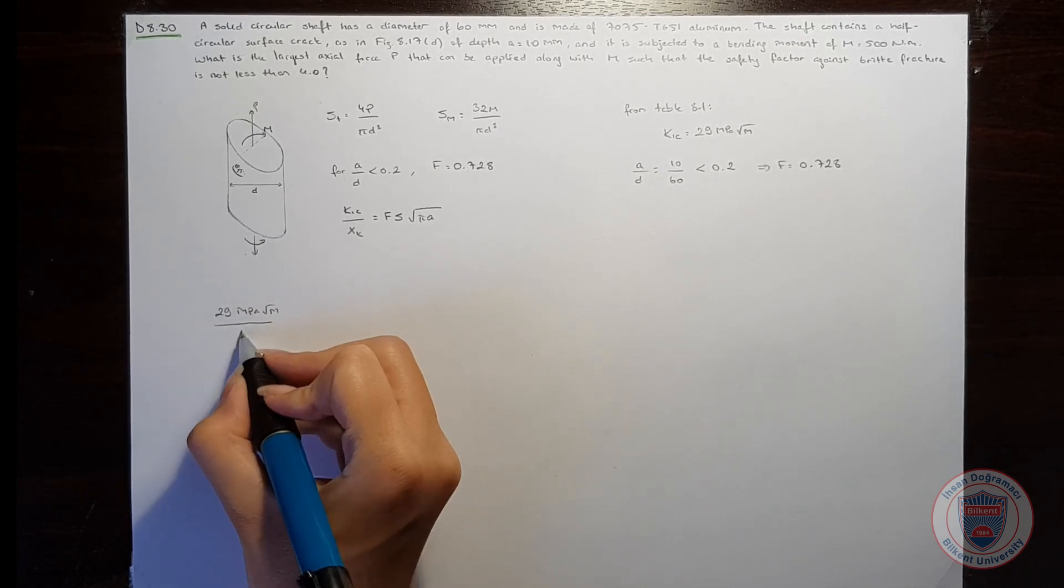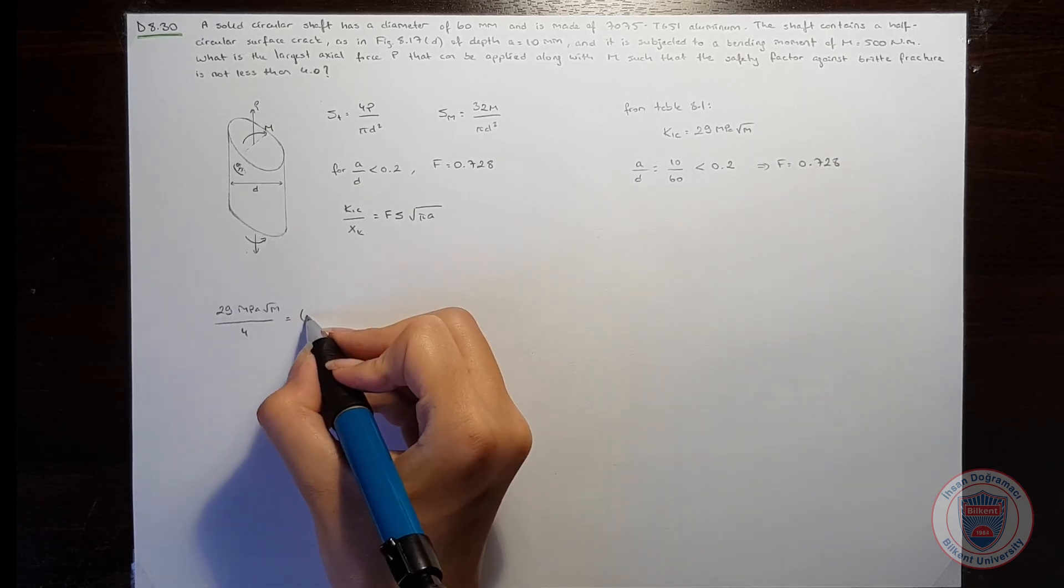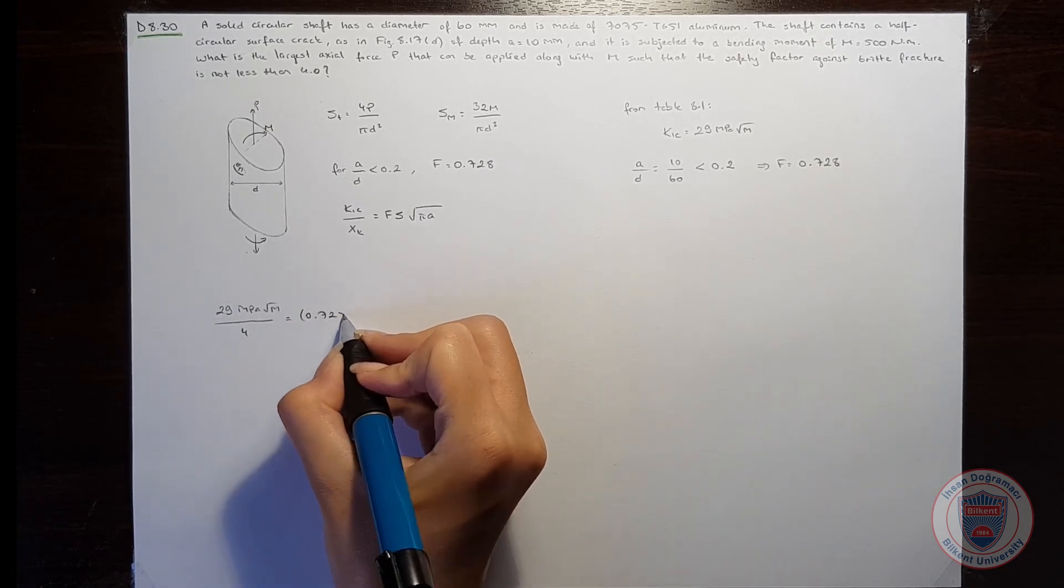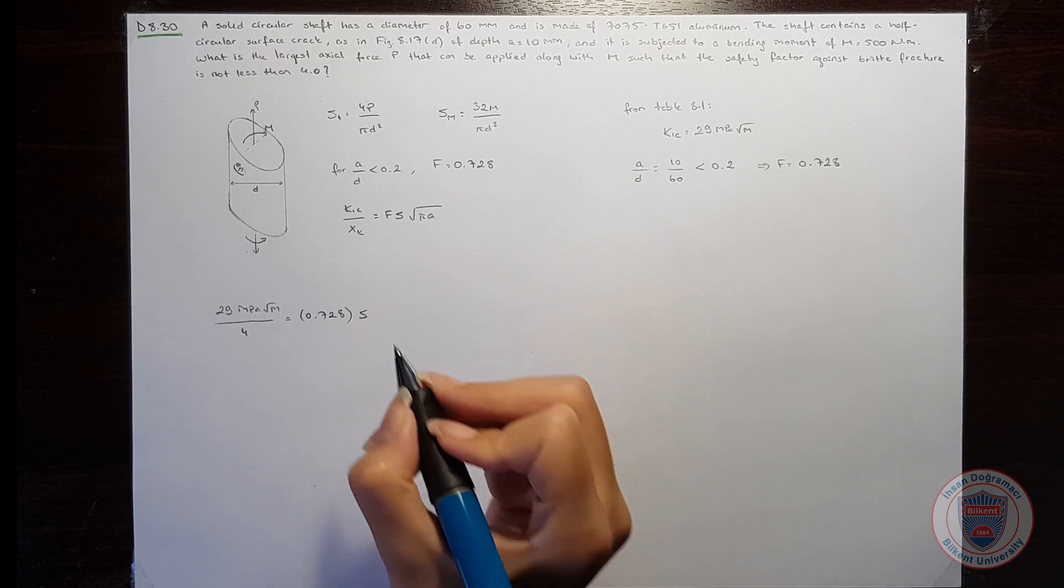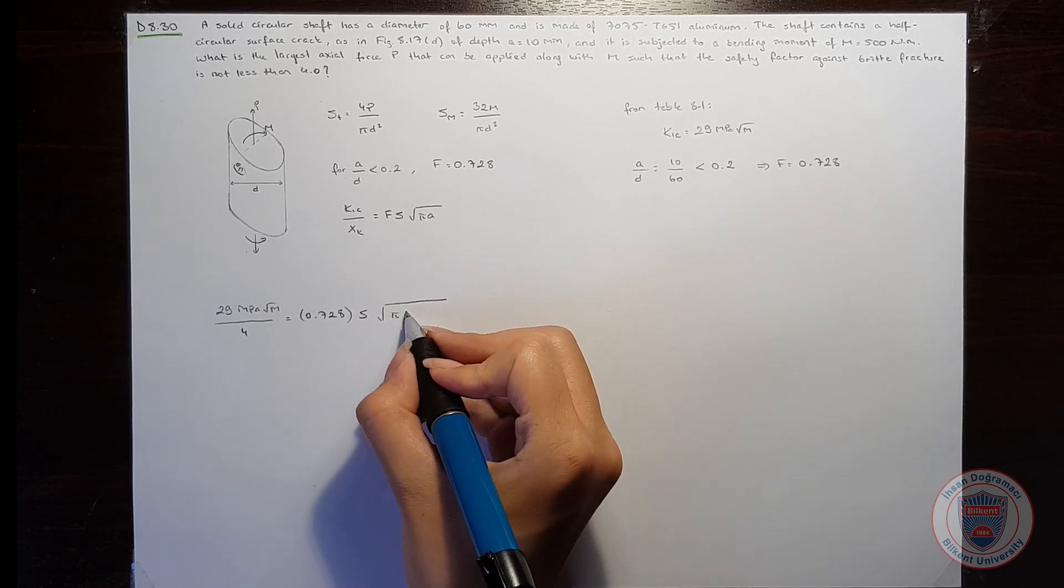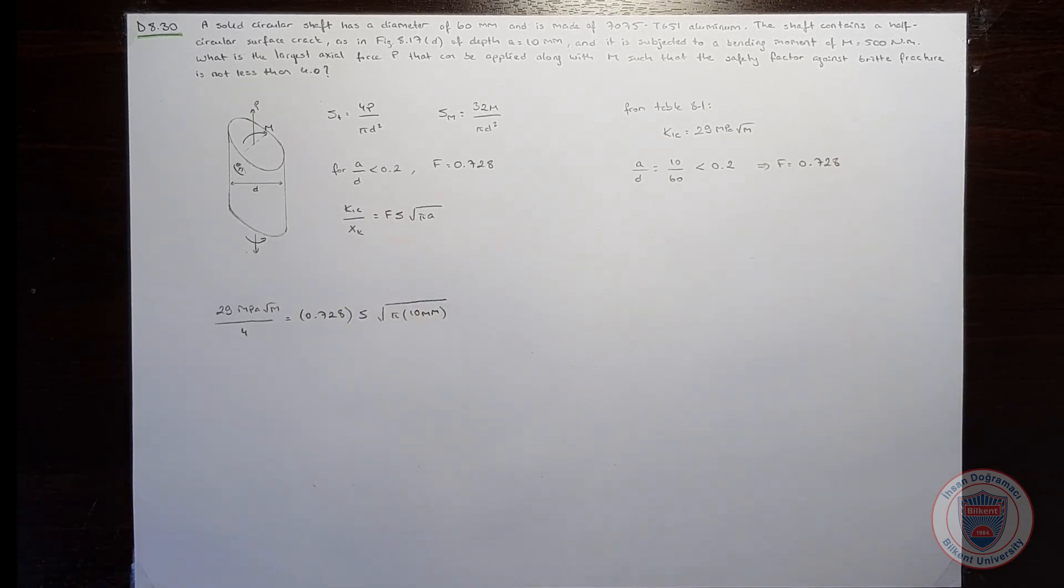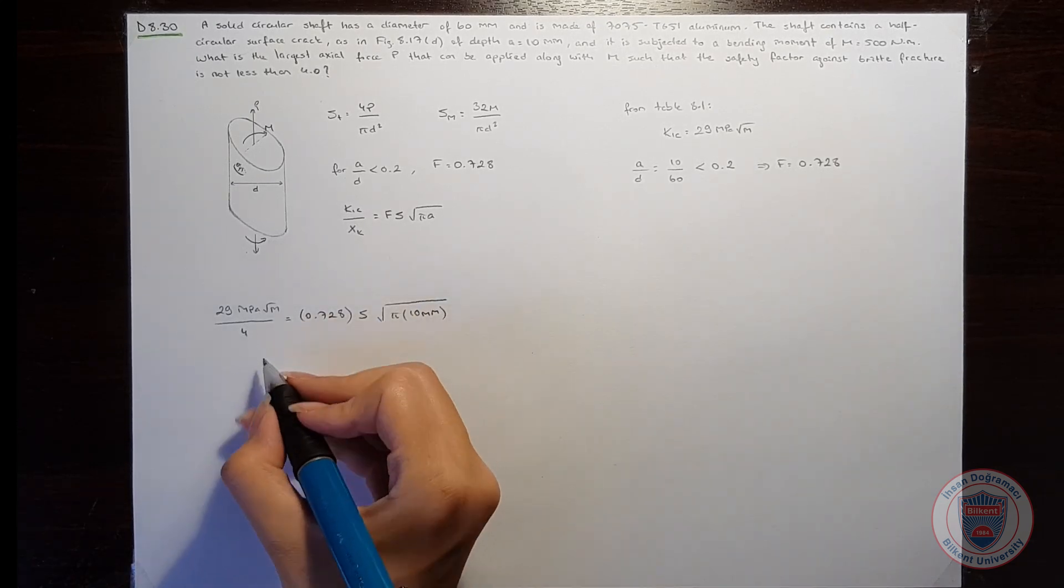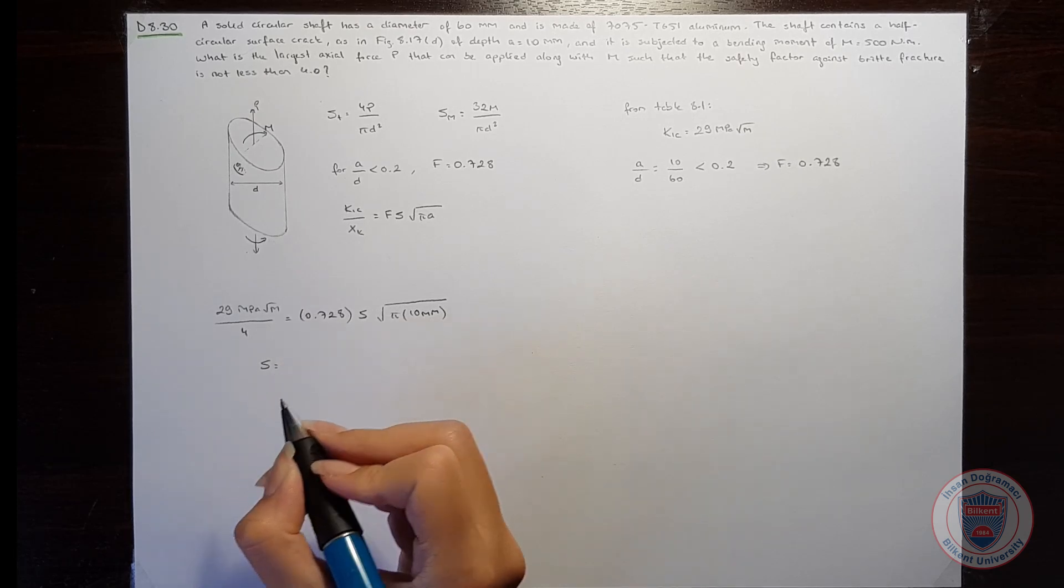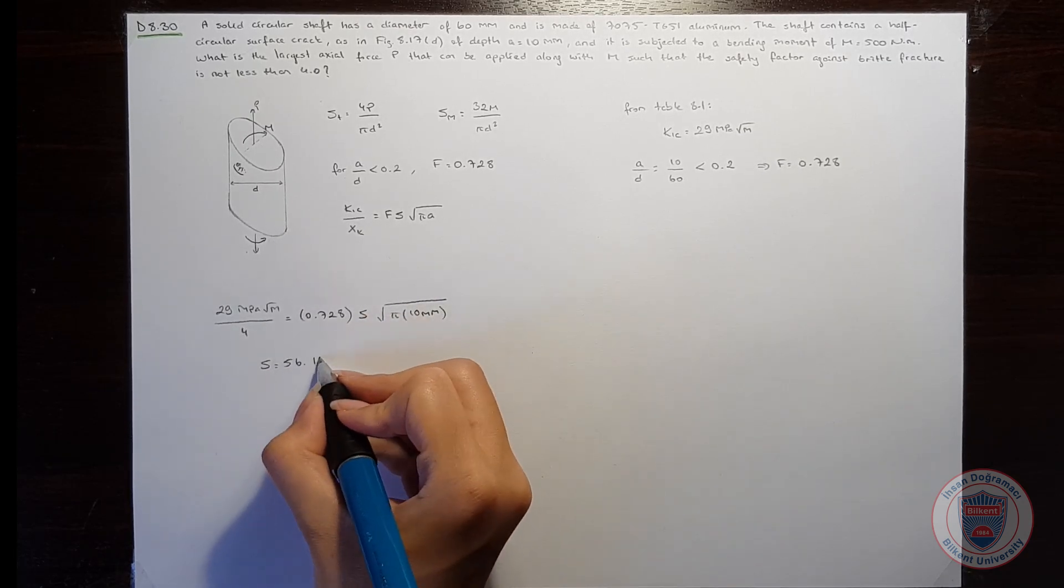KIC over the safety factor is equal to the form factor times S times square root of pi times the crack length, which is 10 millimeters. And we will get S is equal to 56.19 MPa.